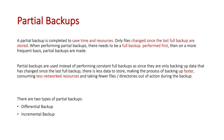Partial backups are completed to save the time and resources of backing up data. They back up only files that have been changed since the last full backup, saving time because we're not backing up everything on the system. A full backup still needs to be completed first, done at least once a week, and then partial backups are performed on a more frequent, daily basis.